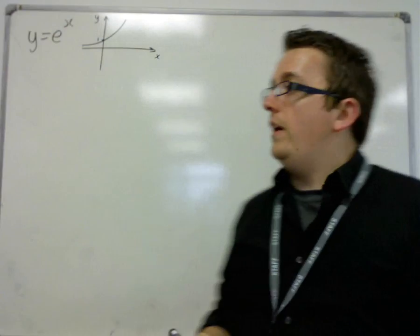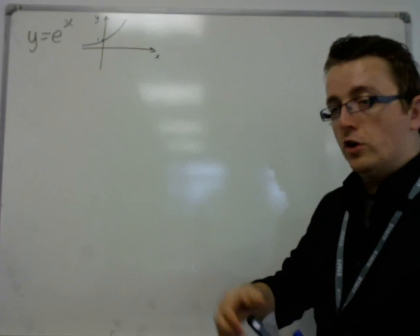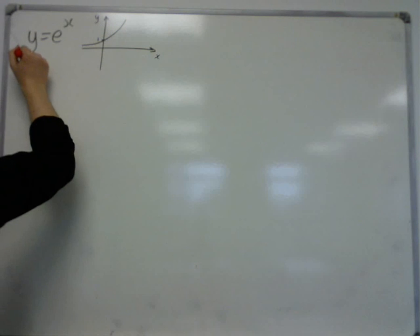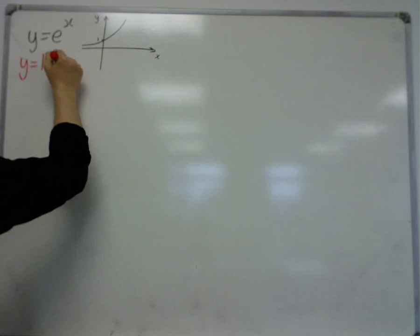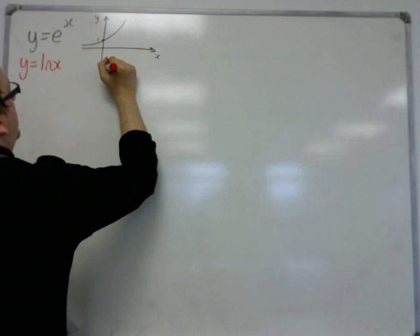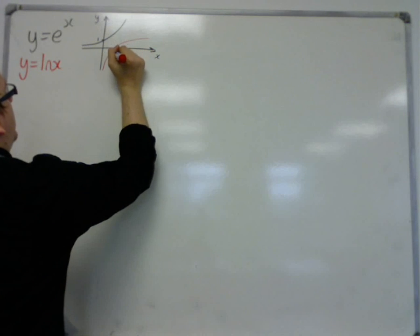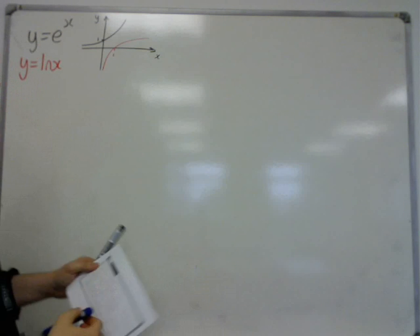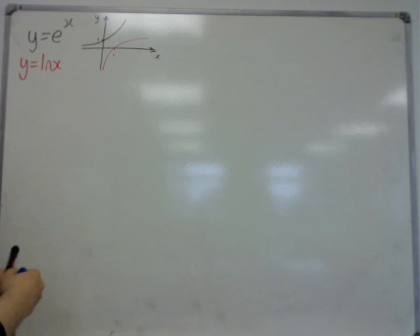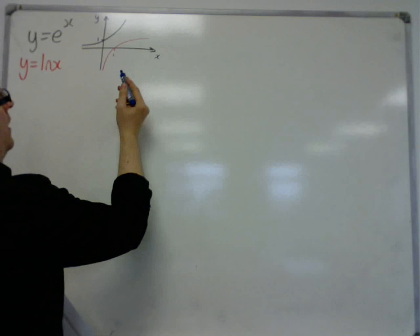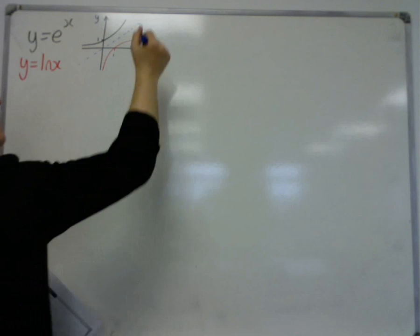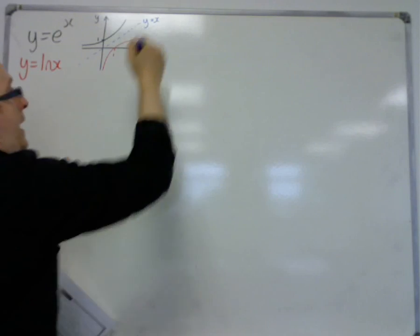And then we have y is equal to log x, so I'll do that one in red. And y is equal to log x looks something like this, going through 1 on the x-axis, and you should notice that, as I've shown before in another video, that there is a line of reflection in y is equal to x.